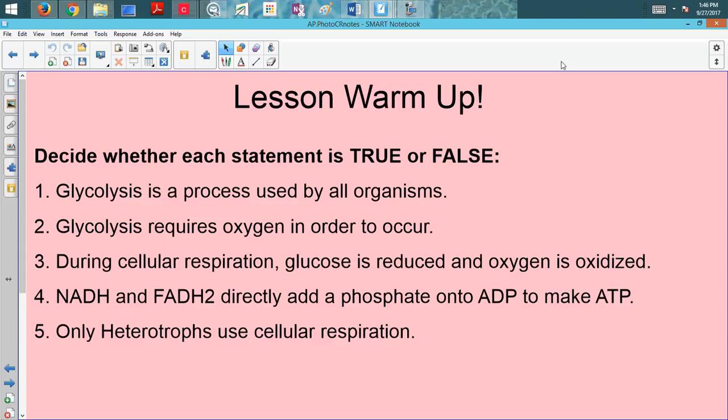Number four, NADH and FADH2 directly add a phosphate onto ADP to make ATP. That is false. Their job is just to simply carry electrons to the electron transport chain, which ultimately results in a gradient of hydrogen ions, which ultimately provides the energy then to make ADP into ATP, but they do not directly add that phosphate group.